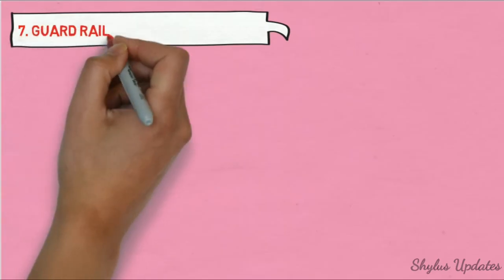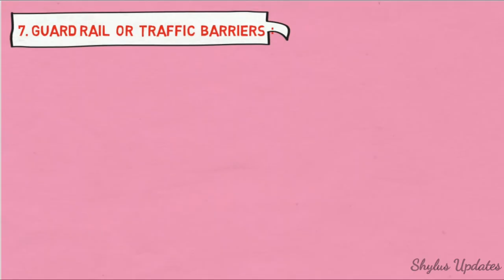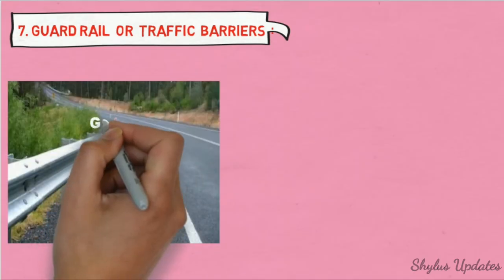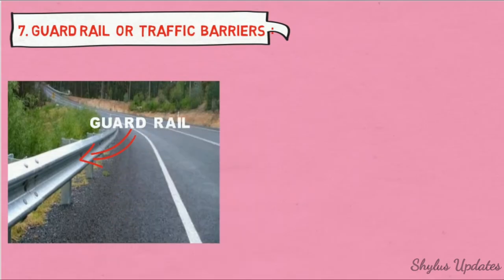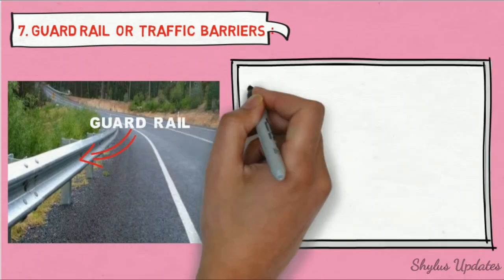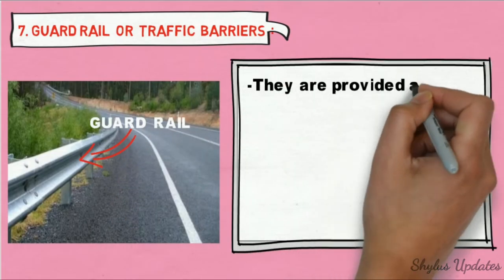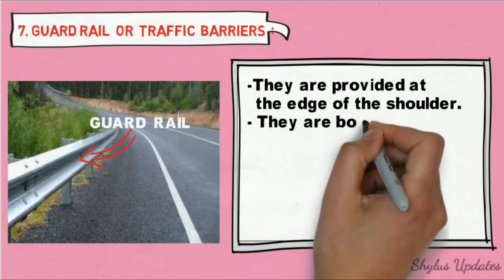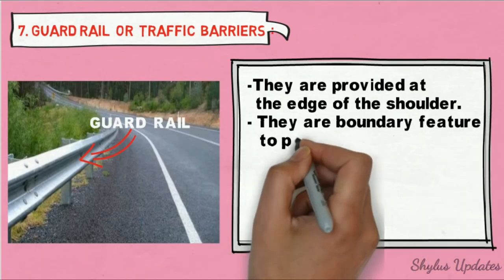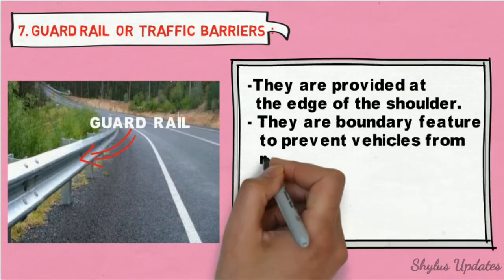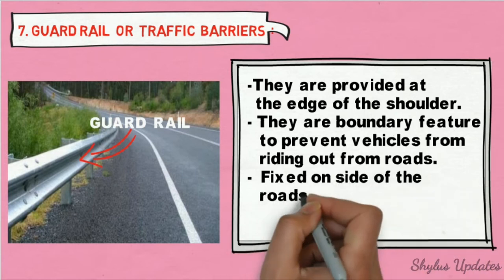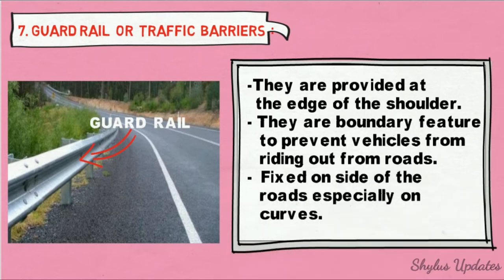Guard rail or traffic barriers. They are provided at the edge of the shoulder. They are a boundary feature to prevent vehicles from riding out from roads. They are fixed on the side of the roads, especially on curves.